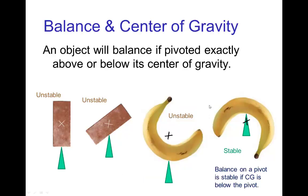Now one property of the center of gravity is that if you have an object that's exactly balanced on a pivot point, then the center of gravity will be either directly above the pivot point or directly below the pivot point. If it's directly above the pivot point, then any small shift in the object and it tips over and falls over, so that's an unstable balance.